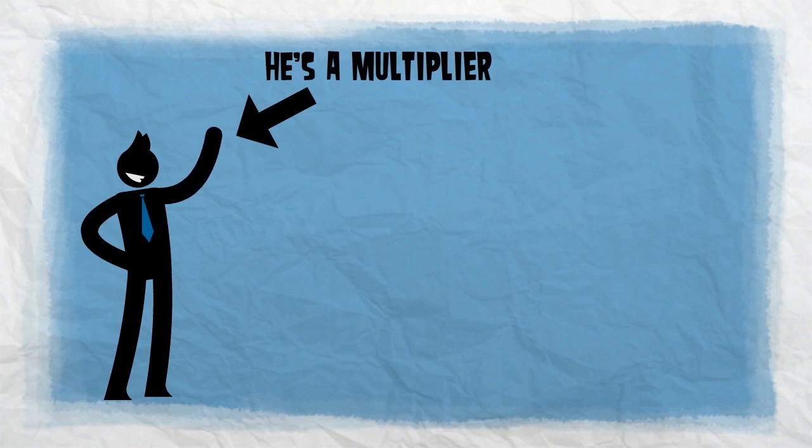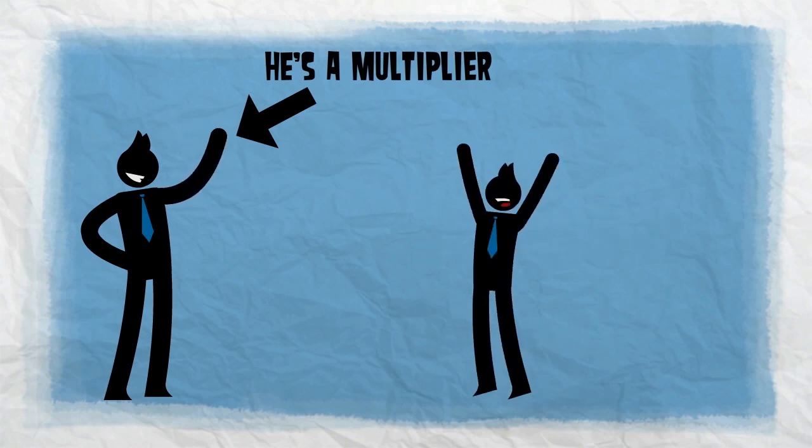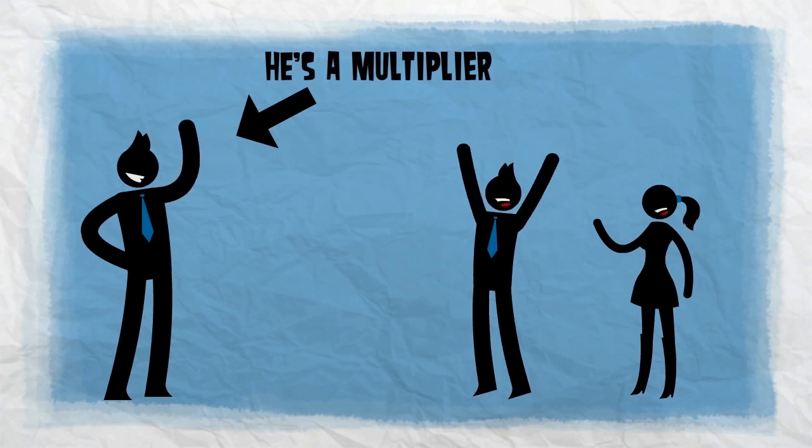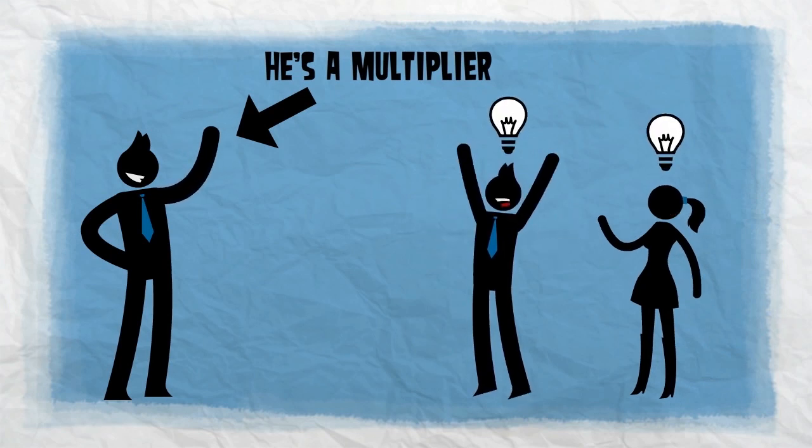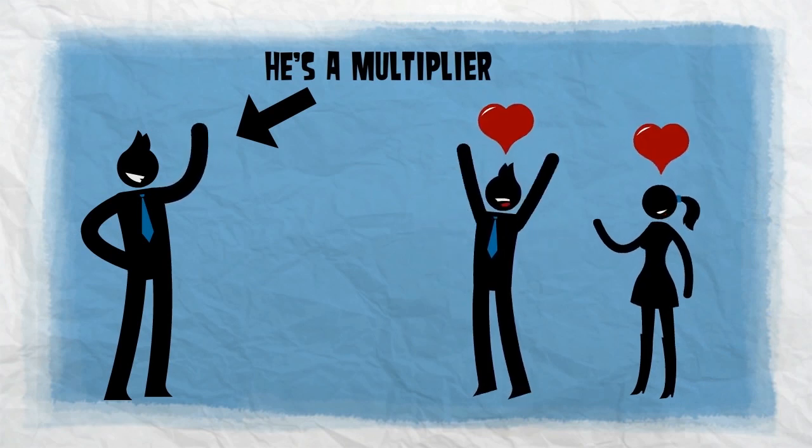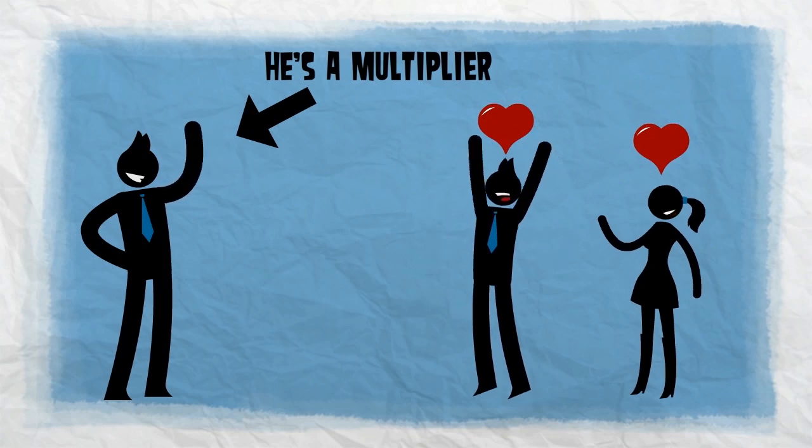On the other hand, there are leaders that are classified as multipliers. These leaders use their skills and abilities to make others better. When these guys walk into a room, light bulbs appear over people's heads, problems get solved, dreams turn into action, and people love coming to work every day.